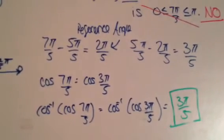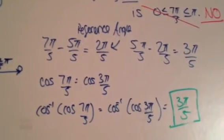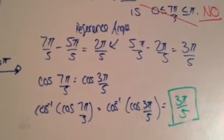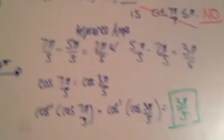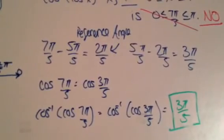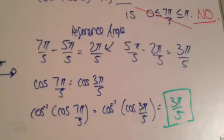The inverse cosine can only be in the first and second quadrant, so that satisfies it. You can definitely see that 3π/5 is less than π and greater than zero. So that's how you can find the equivalent angle.